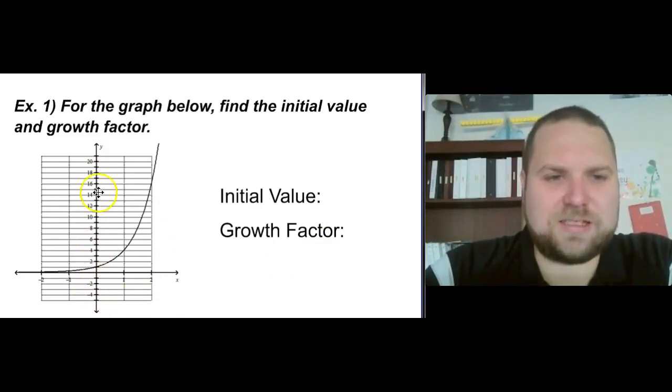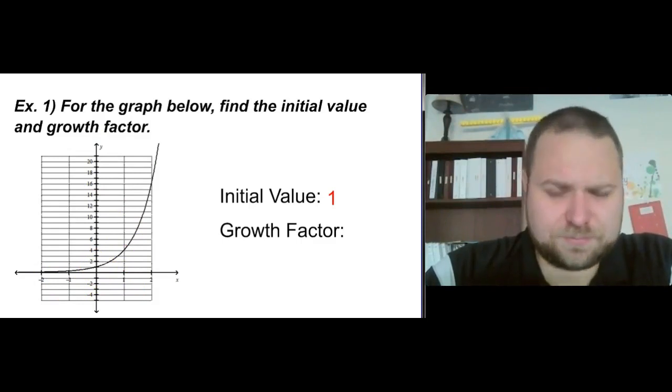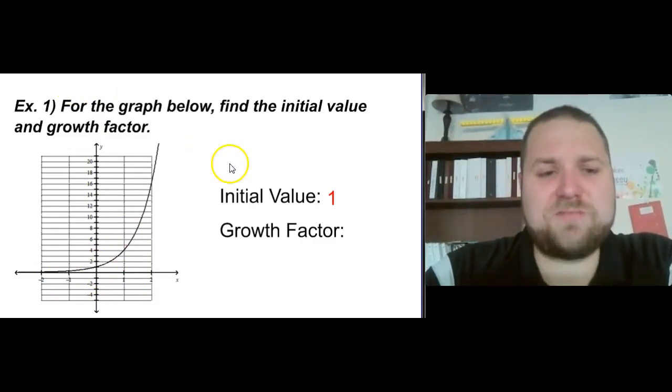And fortunately, that's one of the easier things we know how to do on a graph. So we look at the y-axis, and we look for where the graph crosses the y-axis. Well, it crosses at 1, and so my initial value is just going to be 1. It is literally as easy as that. Remember that the initial value is the y-intercept.